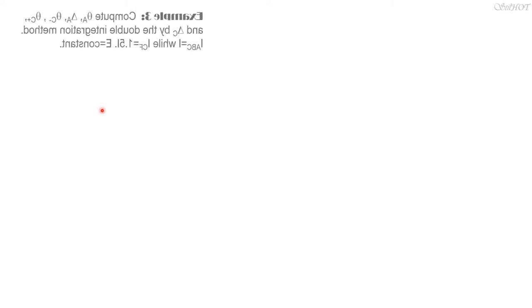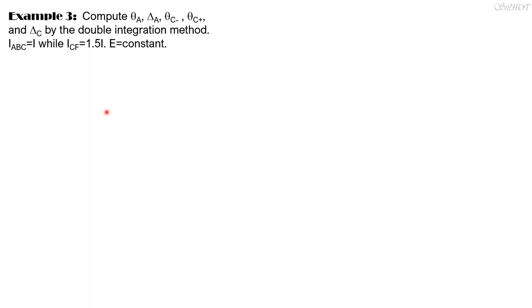Hello everyone, let's have the solution to example 3 by the double integration method. Compute the slope and deflection at a slope just to the left of C, slope just to the right of C, and the deflection at C by the double integration method. Take note: the moment of inertia for portion ABC of the beam is equal to I, while that of portion C to F is 1.5I, and E is constant.